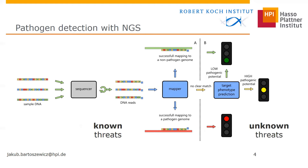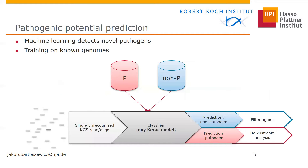To solve this, we need a second step of the pipeline where a target phenotype — for example, a bacterium being a pathogen or a virus infecting humans — can be predicted directly from isolated NGS reads or read pairs. More specifically, we can train a machine learning classifier based on known genomes and then test it on a held-out set of bacterial species or viruses unseen in training. The classifier can then be used to filter out non-pathogen reads and select the reads originating from pathogens for downstream analysis.